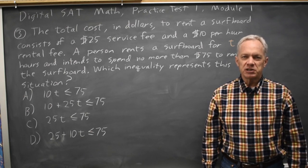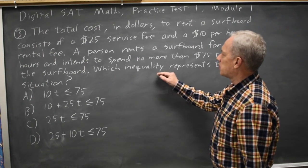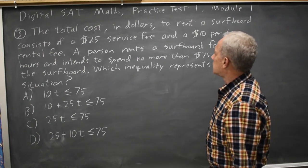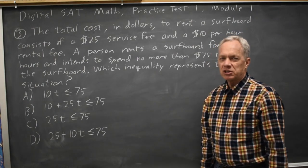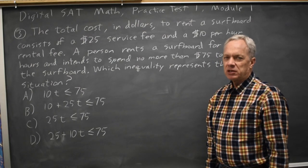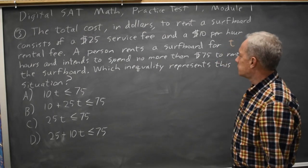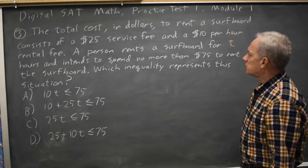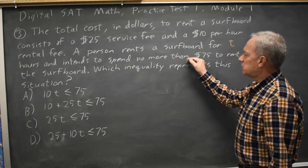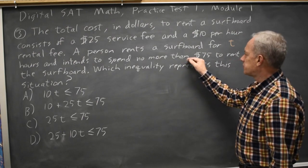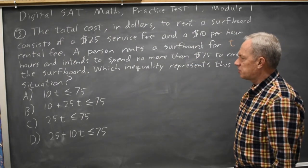The College Board is asking us to write an inequality based on this paragraph. We're charged a $25 service fee plus $10 for each hour of rental, and the question is what inequality describes renting if we intend to spend no more than $75.